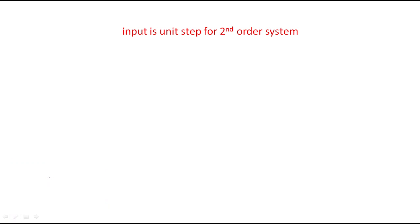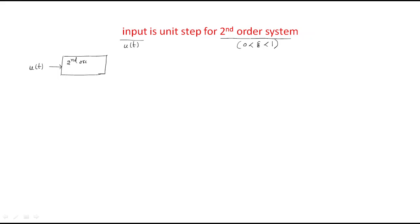Since input u(t), the unit step signal, is applied to the second order system, we need to discuss how the output behaves. The input is u(t), applied to the second order system with damping ratio 0 < ζ < 1, and we need to find the output c(t).